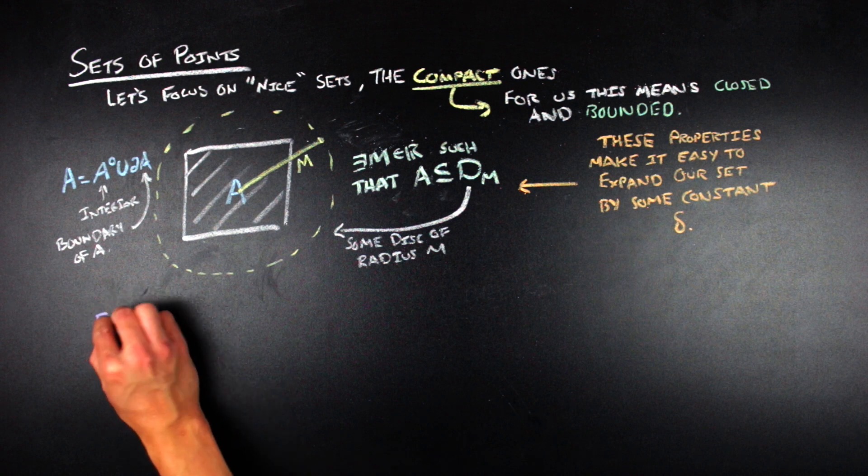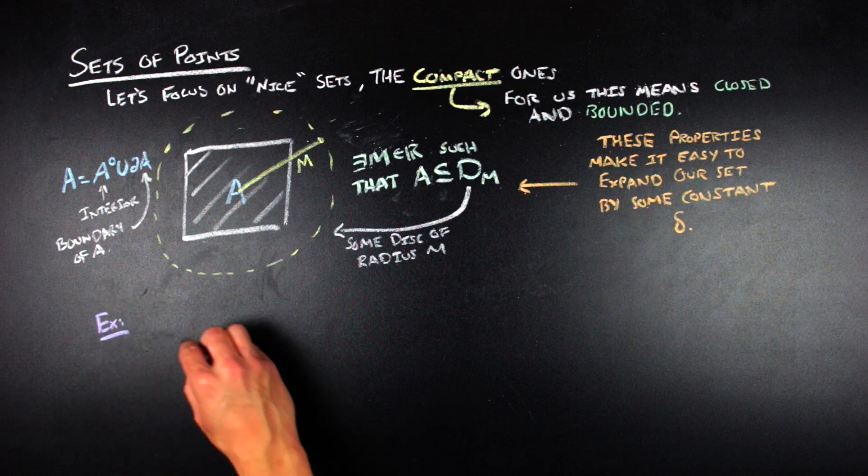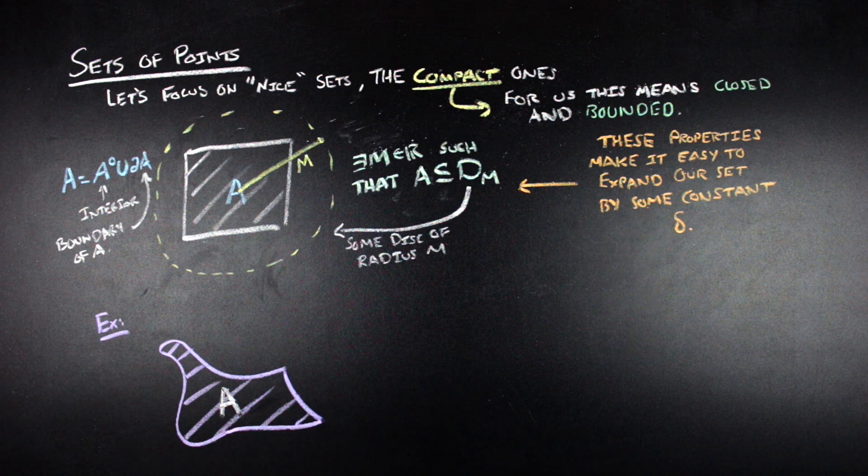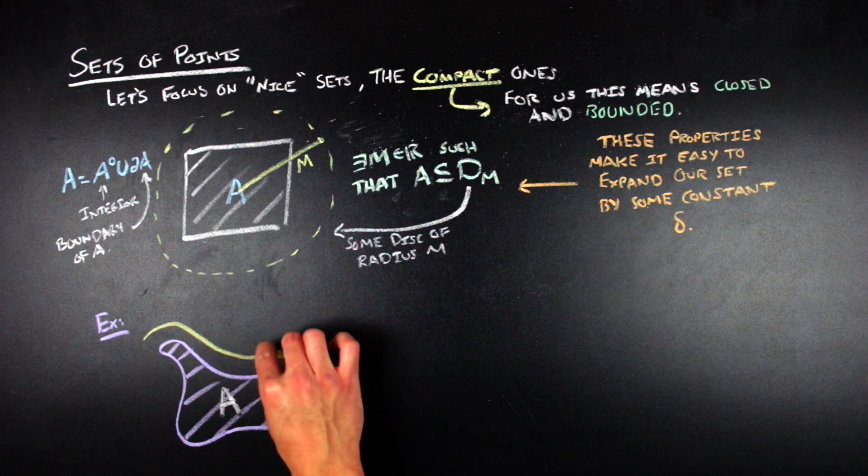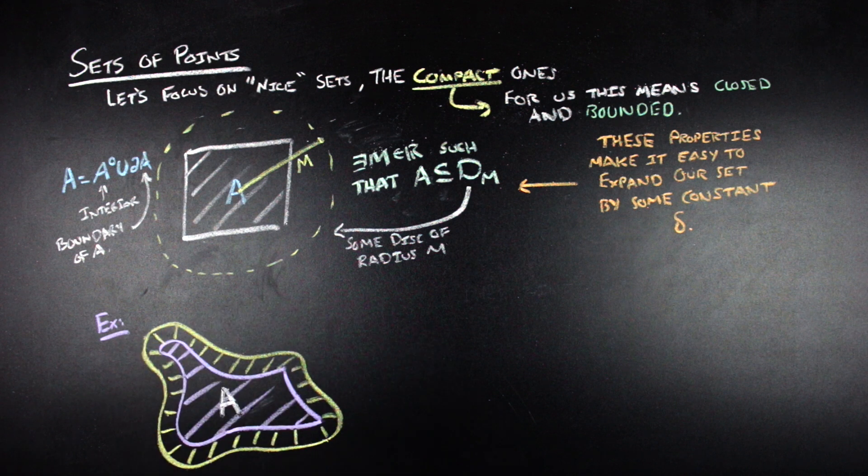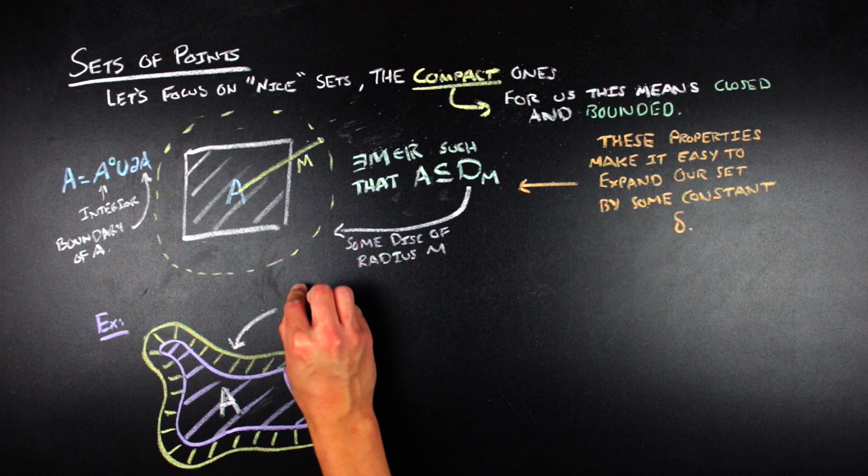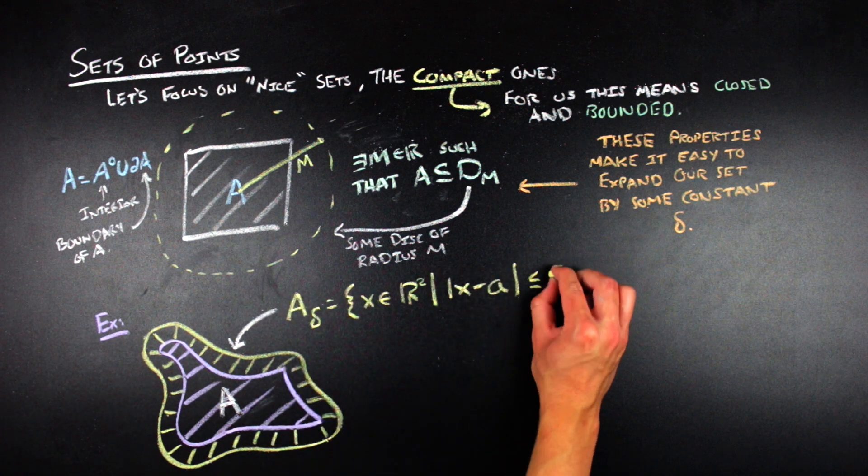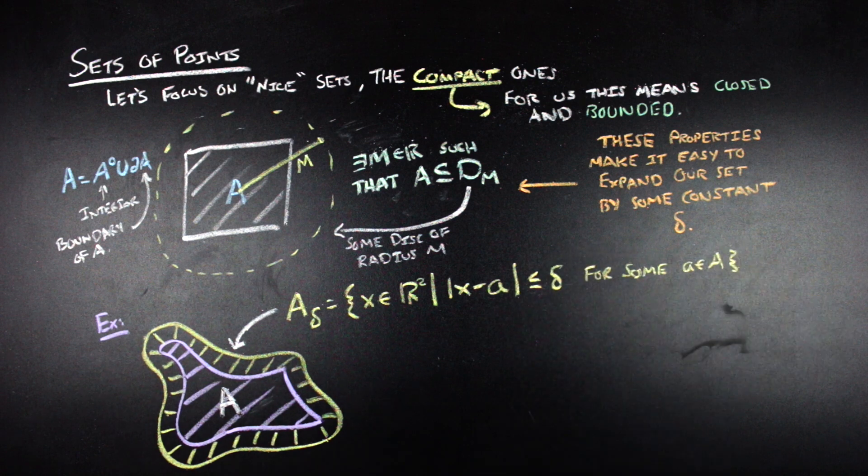These properties are going to make it really easy to talk about expanding a set by a certain constant, which we'll call delta. And so to look at an example of expanding a set by delta, what we can go ahead and do is we can go ahead and look at all of the points in our set A and figure out what other points in the plane are not included in A that are at least less than or equal to delta away from another point in A. This will give us another set, which we'll call A delta, which is sort of like A. It just has a perimeter around it that is delta farther out, intuitively that is.